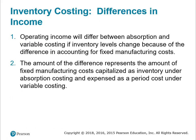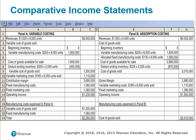We will experience a difference in income between absorption and variable costing due to the difference in accounting for fixed manufacturing costs. Operating income will differ; the amount of the difference represents the amount of fixed manufacturing costs capitalized as inventory under absorption costing, and then expensed as a period cost under variable costing. Fixed manufacturing overhead is the issue. This exhibit highlights the difference between the two methods — panel A calculates operating income under variable costing, and panel B under absorption costing.